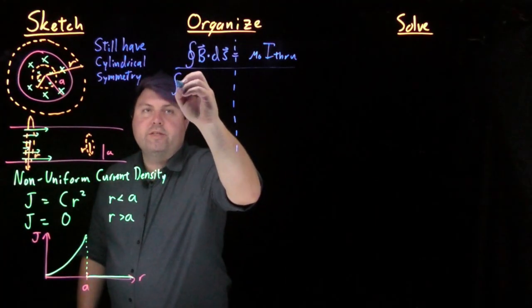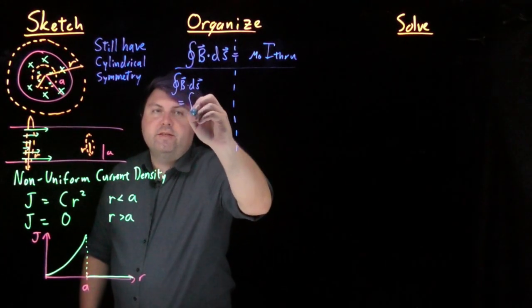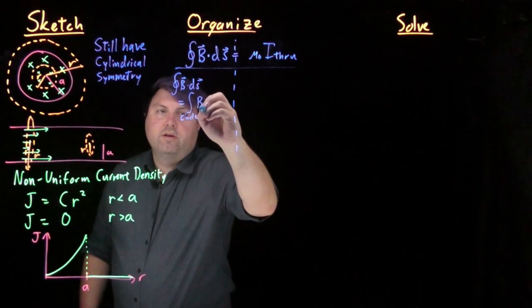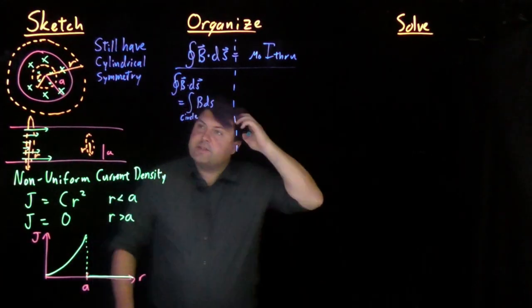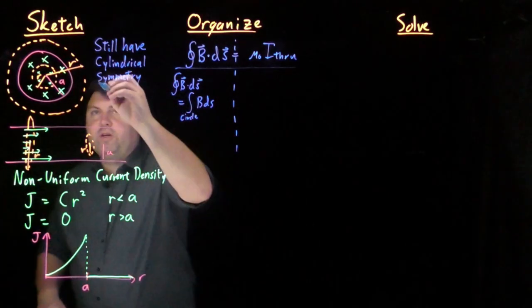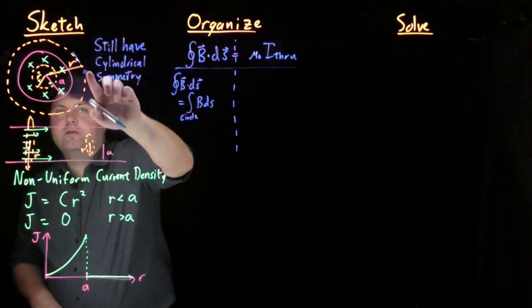For here, we first have that our b dot ds is equal to our closed integral over a circle of b ds, because we know that our magnetic field is going to be in the tangential direction.